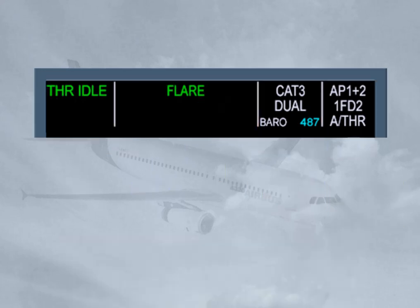with the related value as entered on the MCDU performance page. In certain cases, the second and third columns are combined to display a single autopilot flight director mode, which is common laterally and vertically. These modes are common modes for approach, which means that they are closely linked together.